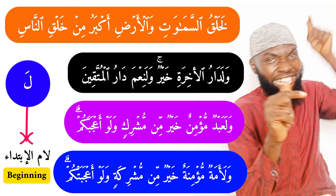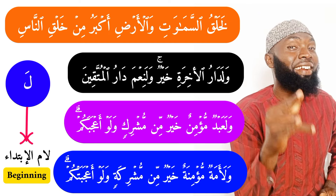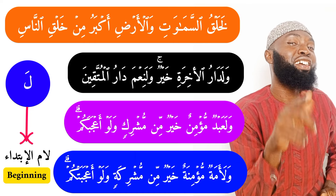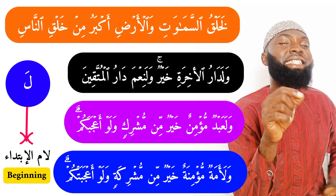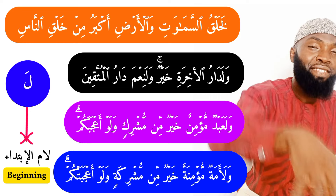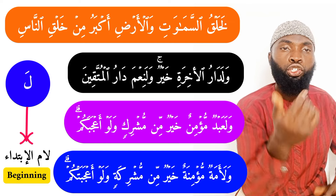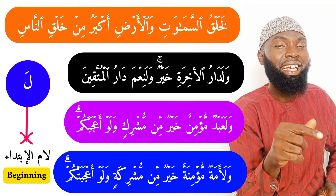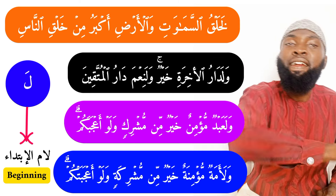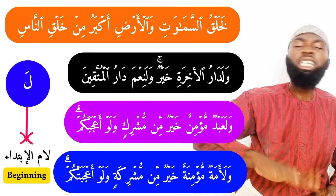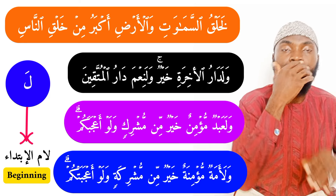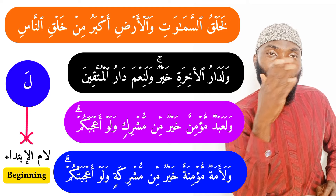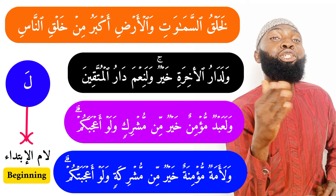Now going back to re-translate: 'La khalqus samawati wal ardi akbaru min khalqin nas' means 'Indeed the creation of the heavens and the earth is bigger than that of the human.' The second verse: 'Wala daru al-akhirati khayrun' means 'And indeed the home of the hereafter is better.' The third: 'Wala abidun mu'minun khayrun min mushrikin' means 'And indeed a believing slave is better than the idolater' — there is no doubt about it. The same applies to the believing slave girl.